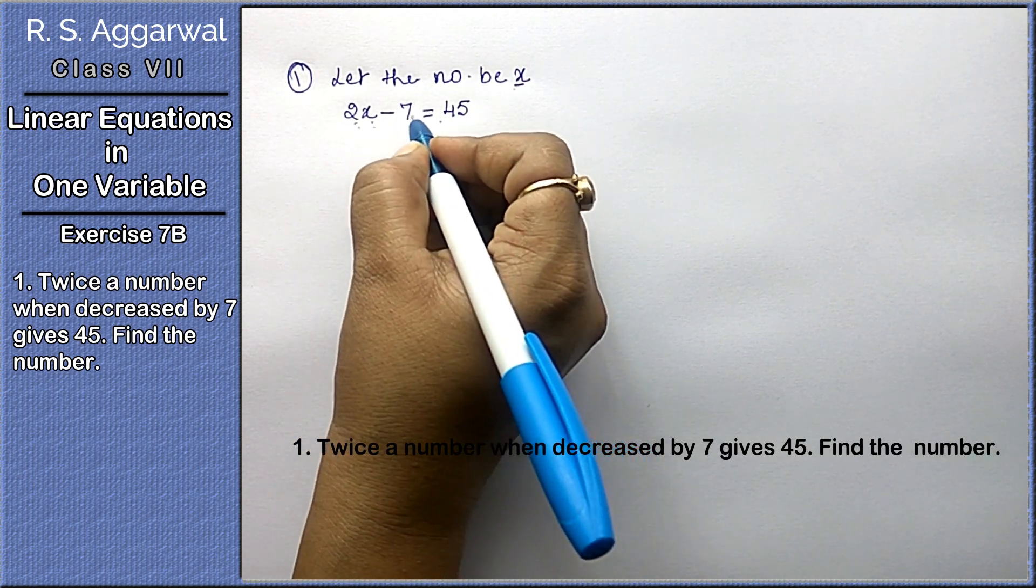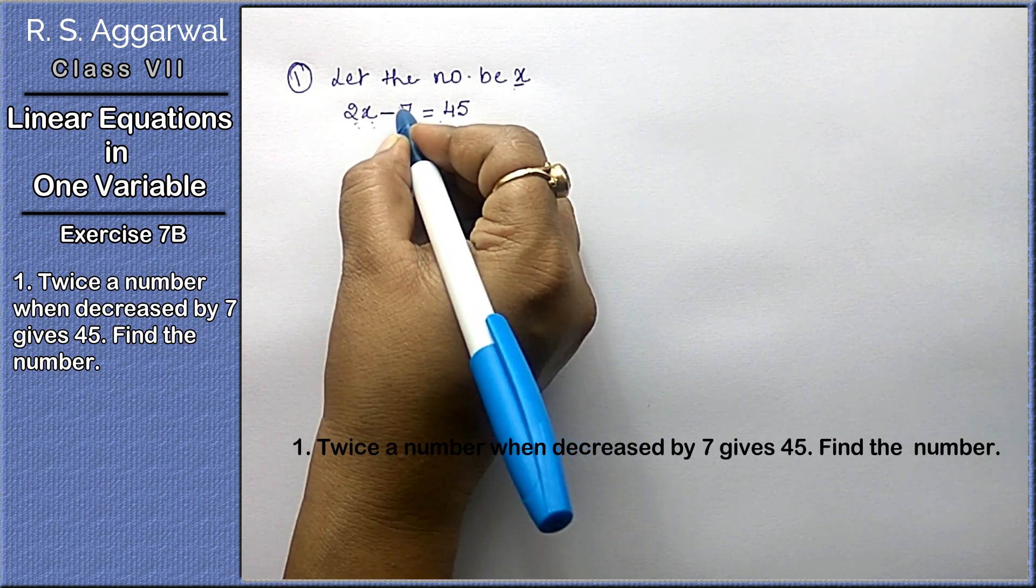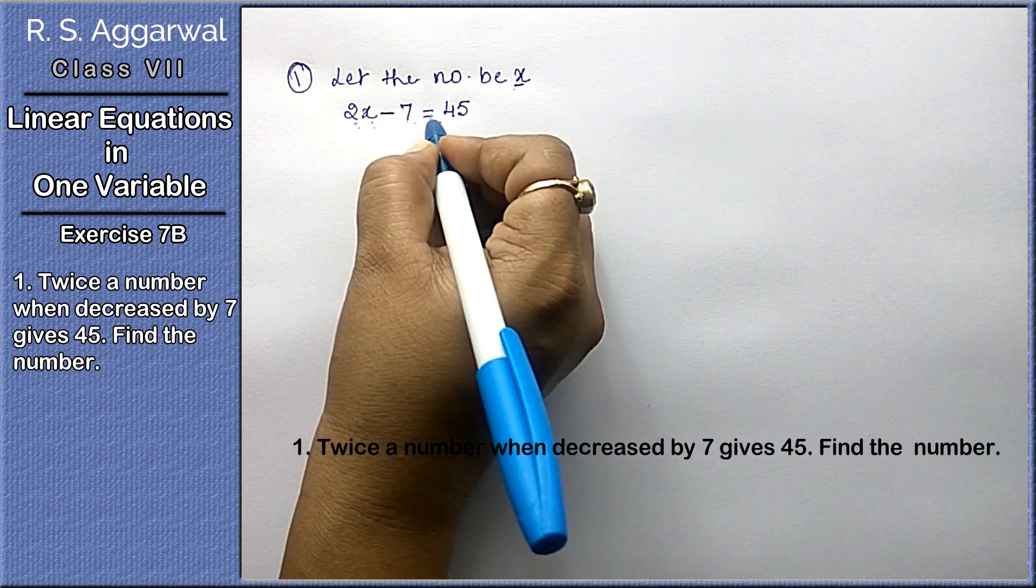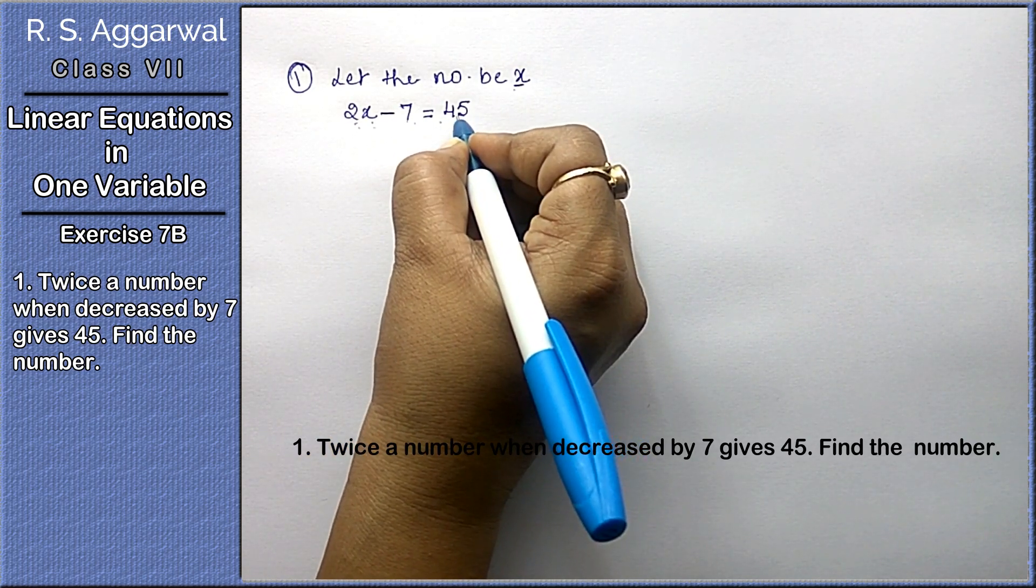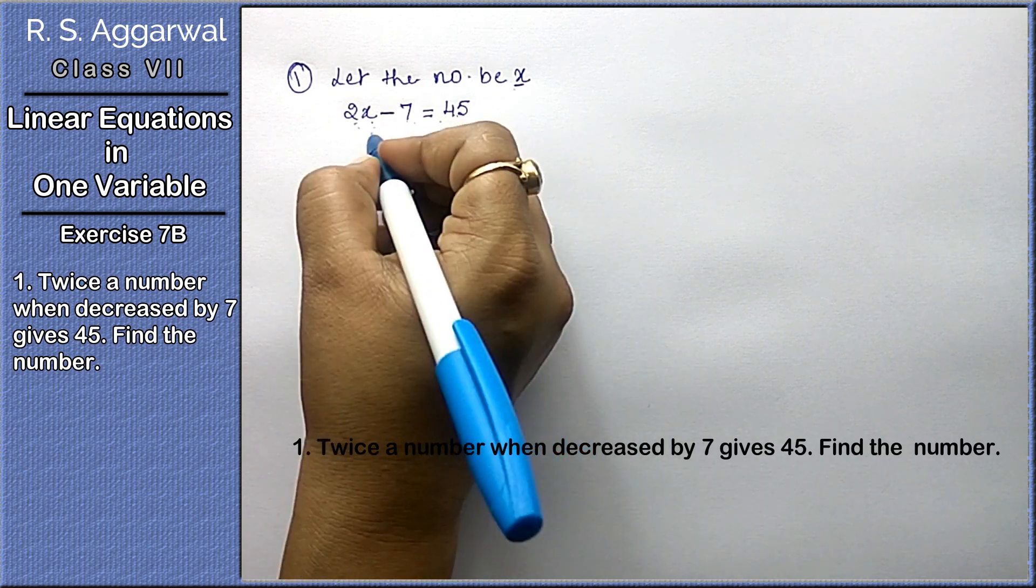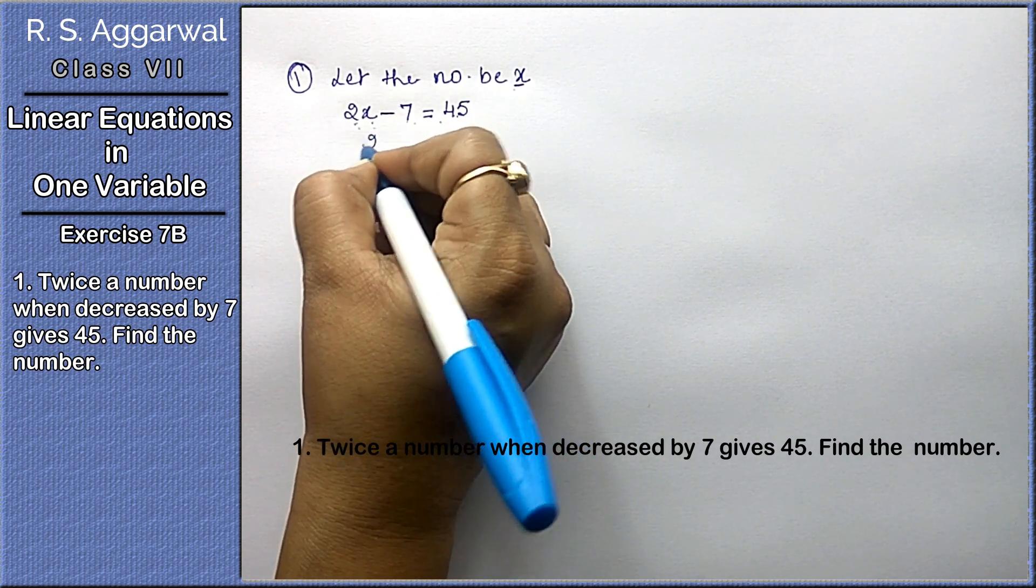It gives, gives means equal to 45. The equation is 2x minus 7 equals 45. Twice a number 2x when decreased by 7 gives 45.